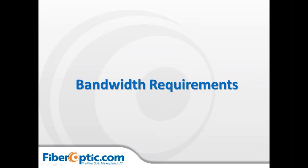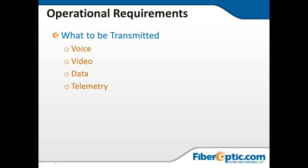Now we're going to go over bandwidth requirements. Bandwidth is basically how much information you can put on a fiber and have it transmit or propagate down the fiber. That includes the type of transmission: are we going to put voice on it, video, plain data, or telemetry? Based on how much of this data is going to be put on the system, you have to know what type of fiber to use.